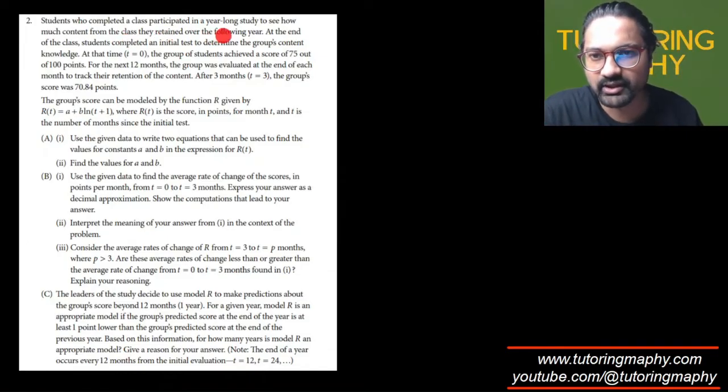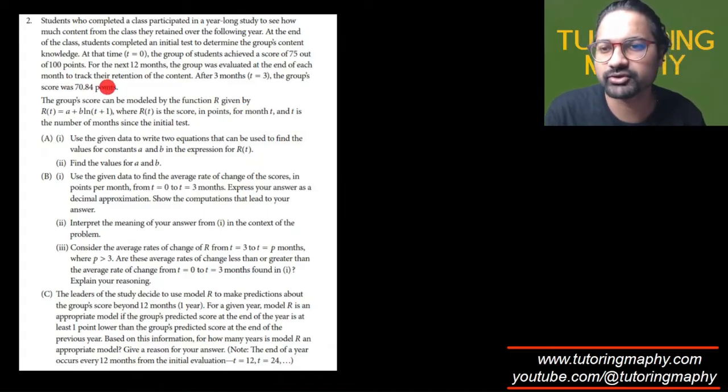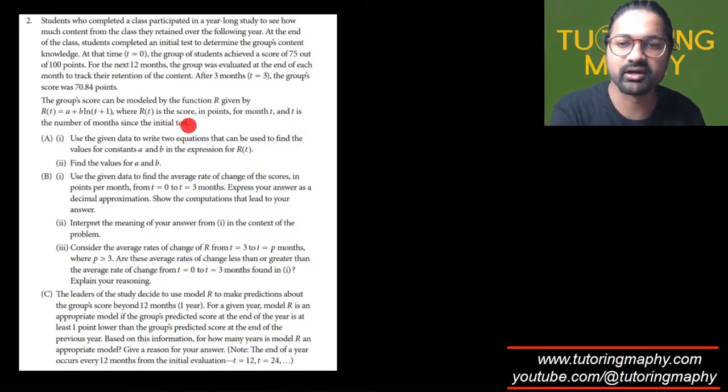Students who completed a class participated in a year-long study to see how much of the content from the class they retained over the following year. At the end of the class, students completed an initial test to remind the group's content knowledge. At that time, t equal to 0, the group of students achieved a score of 75 out of 100 points. For the next 12 months, the group was evaluated at the end of each month to track their retention of the content. And after three months at t equal to 3, the group's score was 70.84.